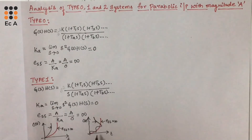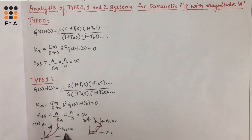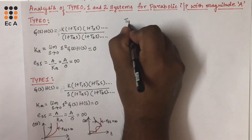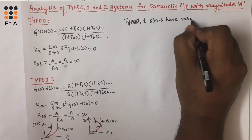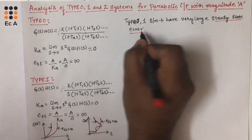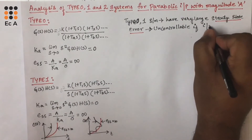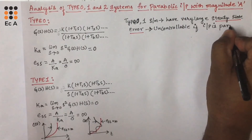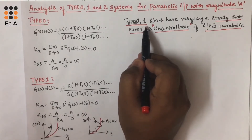These two waveforms show the response of the system. For type 0 as well as type 1 system, if you observe, the steady-state error is infinity and this steady-state error cannot be controlled. So we can say type 0 and type 1 systems have very large, uncontrollable steady-state error if the input is parabolic. Hence, parabolic input should not be applied to type 0 and type 1 systems.